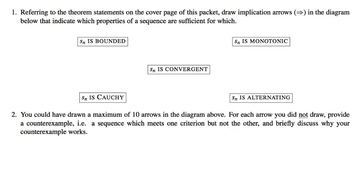Give me one example of an implication arrow that you can draw between a couple of these five properties that shows that one of these conditions is sufficient for another. We have a theorem, the Cauchy Completeness Theorem, that tells us that every sequence which is Cauchy is also convergent.